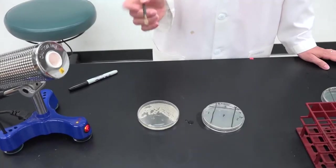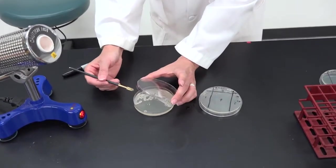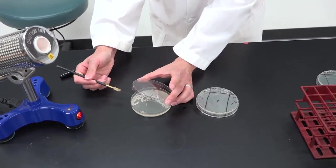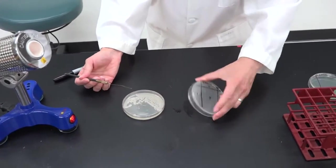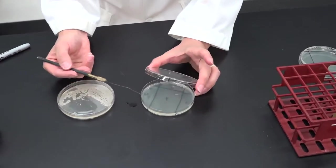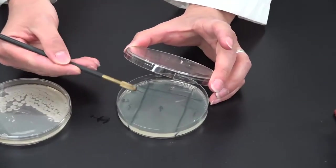You're going to start with a sterilized loop and pick a single colony from your plate. Open up the new plate and streak that colony into quadrant one.